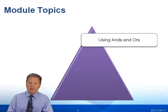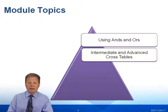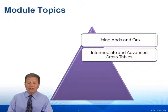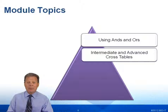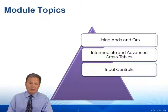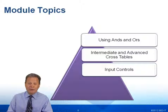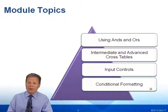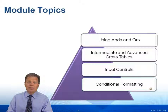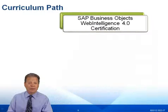We're going to be using ANDs and ORs. We're going to talk about intermediate and advanced cross tables — starting with basic cross tables early in this course, moving to the intermediate level, and then taking you all the way up to the advanced level, building it in stages to make it easier to digest. We'll learn how to apply input controls to give us really neat, really cool dynamic report filtering conditions. And of course, the major topic we finish with is conditional formatting at a more advanced level, applying it to a cross table and not just a typical vertical table report.